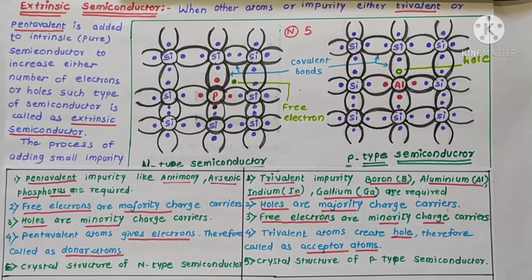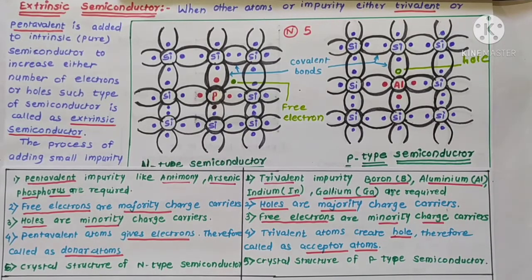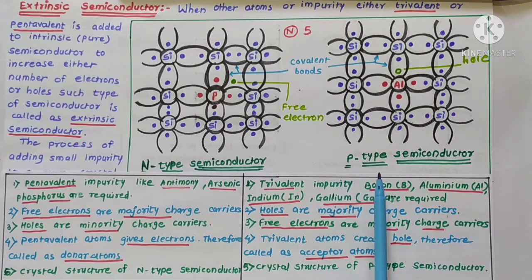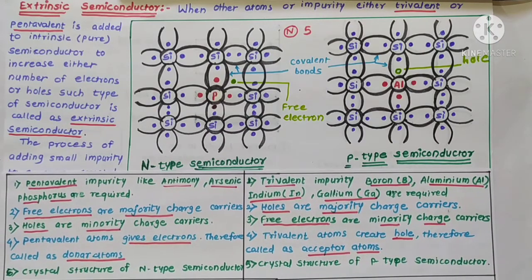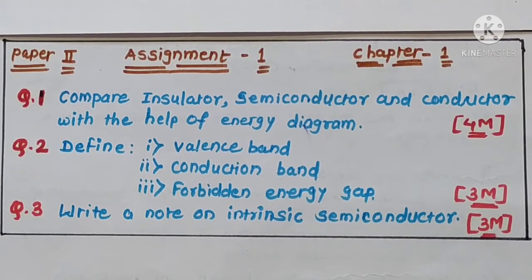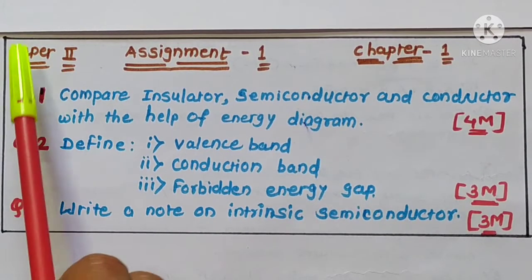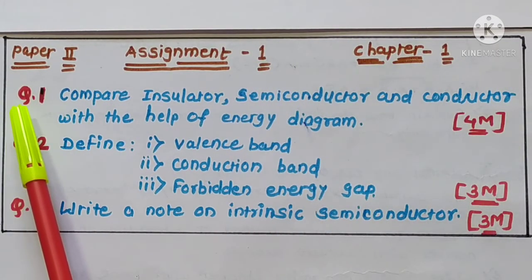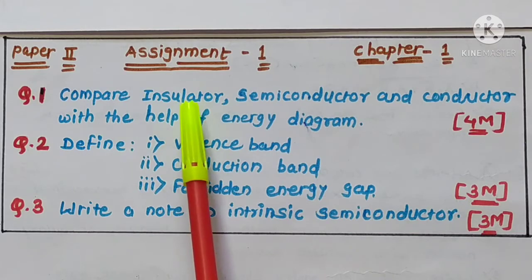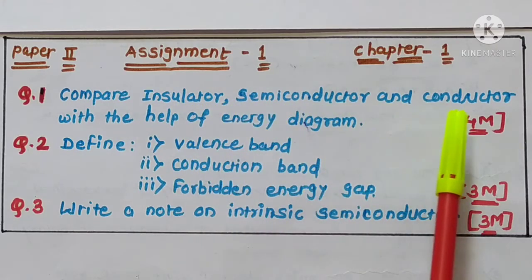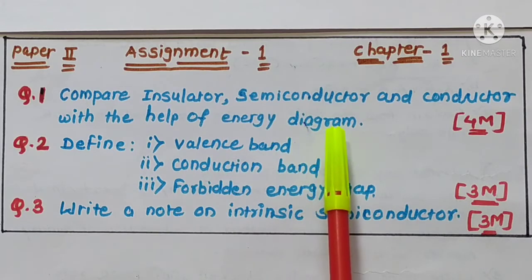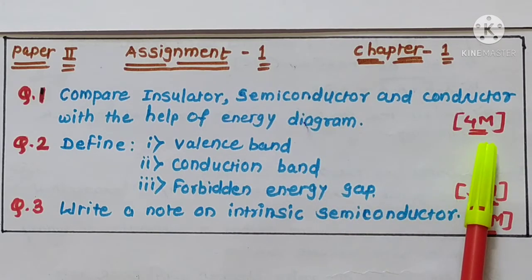Today we have completed N-type semiconductor, P-type semiconductor, and their comparison. This is time for the assignment — Paper 2, Assignment number 1, Chapter 1. Question 1: Compare insulator, semiconductor and conductor with the help of an energy diagram. This question carries 4 marks.